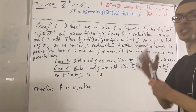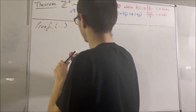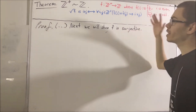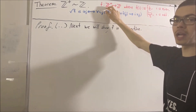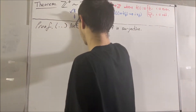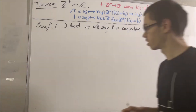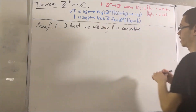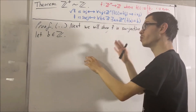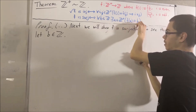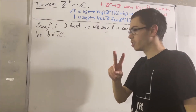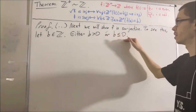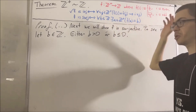Now that we've shown f is injective, we're going to show f is surjective. To say that f is surjective means that for every integer b, there is a positive integer a such that f of a is equal to b. Give me an arbitrary integer — I'll call it b. Our whole goal is to find a positive integer a such that f of a equals b. We'll break this into two cases: either b is greater than zero, or b is less than or equal to zero.